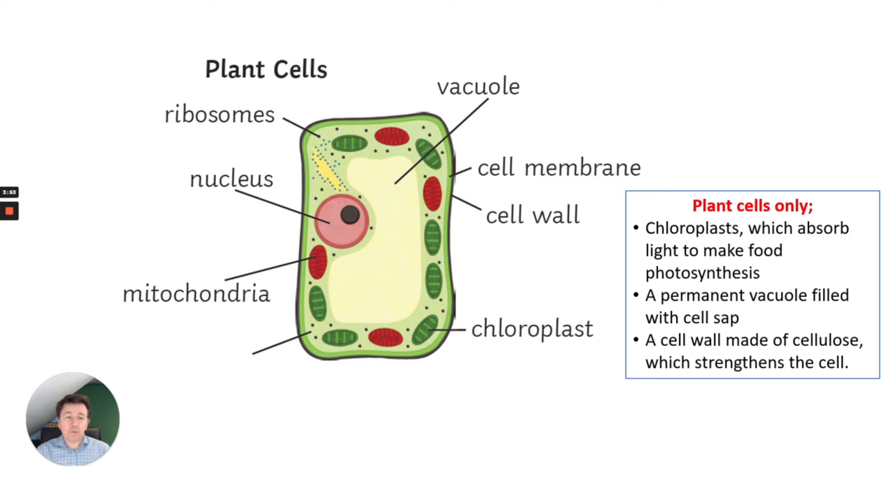Plant cells have three key differences: the chloroplasts which absorb light for photosynthesis, a permanent vacuole which is filled with cell sap, and a cell wall which is made of cellulose which strengthens the cell.